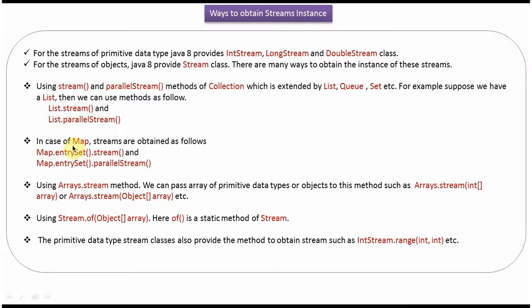In case of Map, if you want to create a stream, then we can use the stream() method of map.entrySet() and the parallelStream() method of map.entrySet().